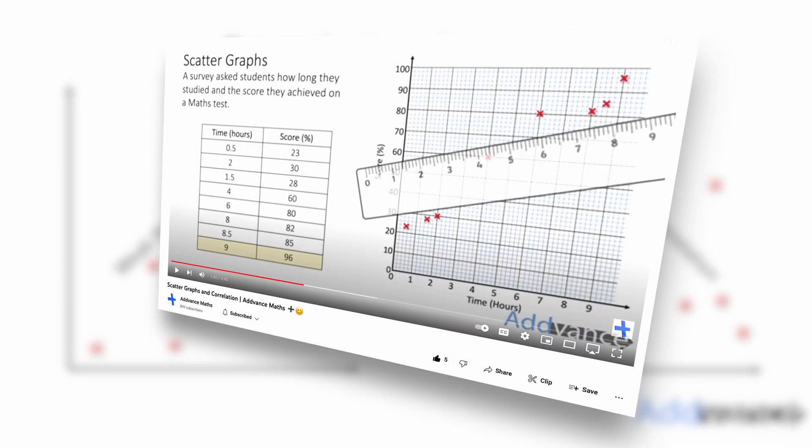If you want to know more about this, I have a video on scatter graphs and correlation and I will link that in the description below. But for the rest of this video, we'll focus on Pearson's coefficient.